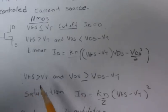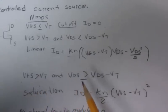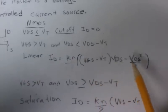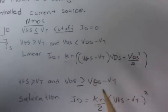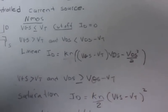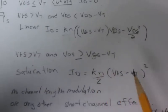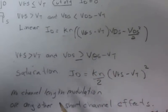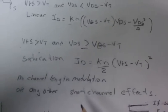And if VGS is greater than VT and VDS is greater than VGS minus VT, you're in saturation, for which you get this equation right here. This assumes no channel length modulation or any other short channel effect.